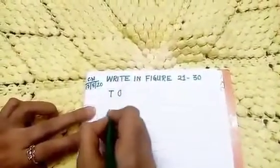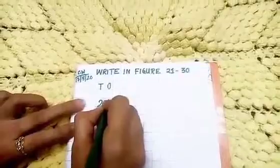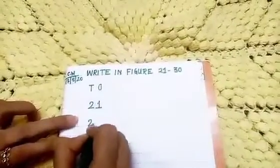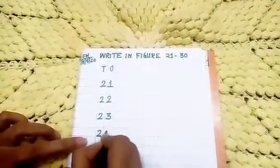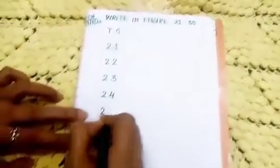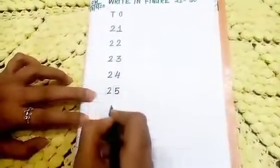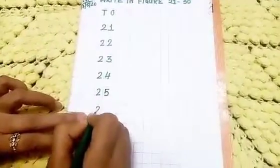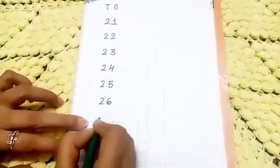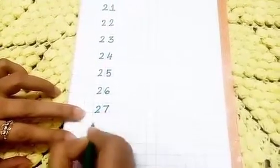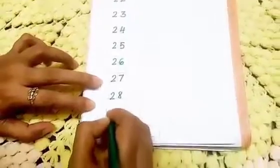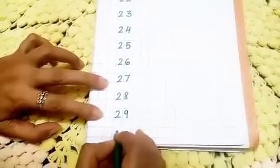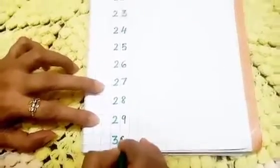So under 1's and 10's you will write: 2, 1, 20, 1. Then 2, 2, 20, 2. Then 2, 3, 20, 3. Then 2, 4, 20, 4. Then 2, 5, 20, 5. Then 2, 6, 20, 6. Then 2, 7, 20, 7. Then 2, 8, 20, 8. Then 2, 9, 20, 9. Then 3, 0, 30.